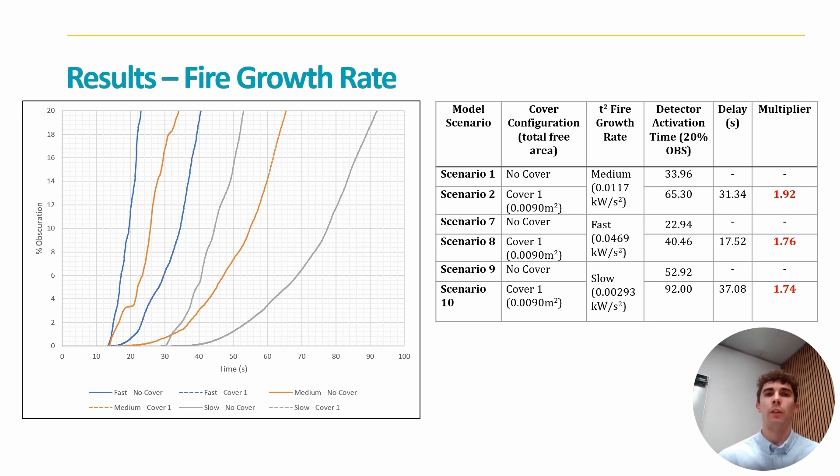Looking now at the fire growth rate models, you can see that this maintains the relationships evidenced in the cover configuration results. Interestingly, however, there doesn't seem to be any clear correlation between the fire growth rate and the time delay multiplier, with each of the medium, fast, and slow T squared fires having approximately the same time delay, which suggests that cover free area is the governing factor in this investigation.